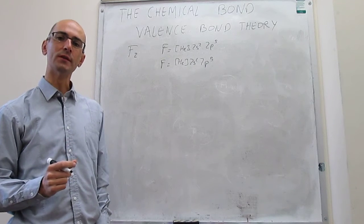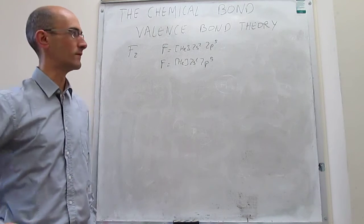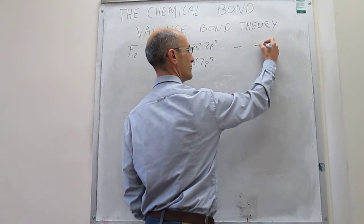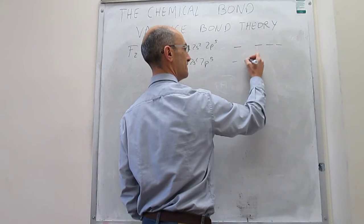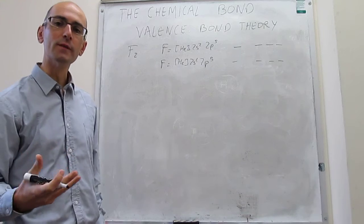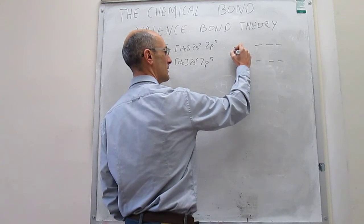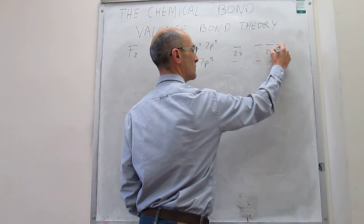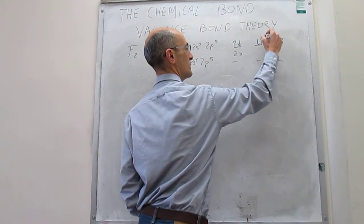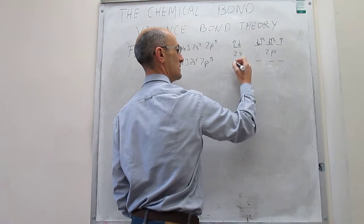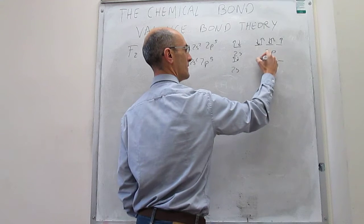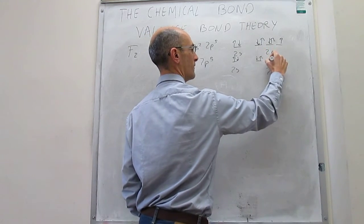When you have more than one electron — that is, when you're dealing with atoms other than hydrogen — it's useful to draw a box electronic configuration. You take the valence electrons and draw the orbitals as boxes, then write the electrons with appropriate spins. So you have your 2s orbital and your 2p orbitals with their respective occupations: 2s has two electrons, and the three 2p orbitals are filled with a total of five electrons.